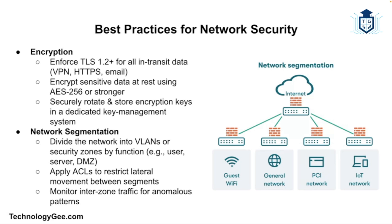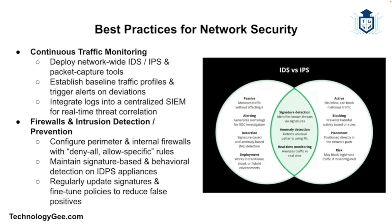Use strong encryption protocols and manage encryption keys securely. You want to implement network segmentation — segment the network into smaller isolated segments to limit the spread of attacks and improve security, and implement strict access controls between the segments. You want to monitor network traffic — use network monitoring tools to track network traffic and detect anomalies, because monitoring helps identify potential threats and respond to incidents promptly.